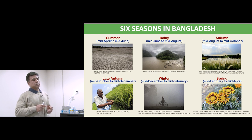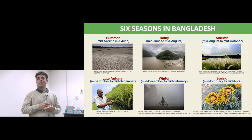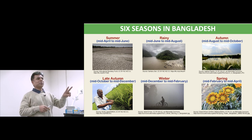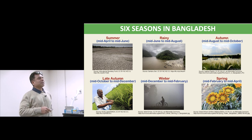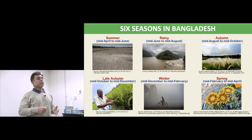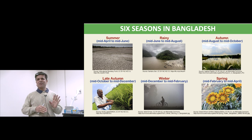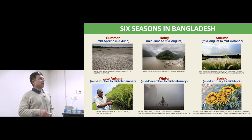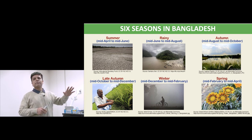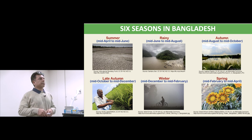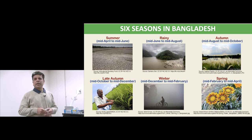In our country, we have six seasons — every two months makes one season. From mid-April to mid-June is summer, then the rainy season, autumn, late autumn, winter, and spring. The lowest temperature is usually around 8 to 10 degrees — never really below five. The country is small but has fertile, flat land without many mountains. The major part of the people are farmers who produce a lot of agriculture and fruits, utilizing the many seasons and rainfall.